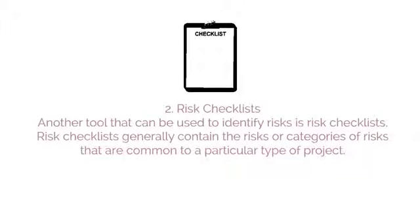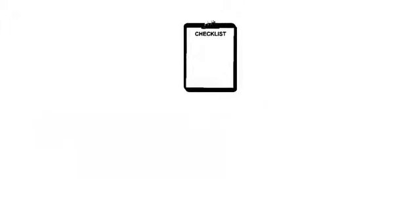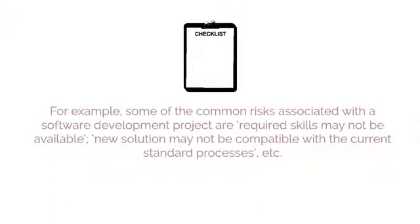Another tool that can be used to identify risks is the Risk Checklist. Risk Checklists generally contain the risks or categories of risks that are common to a particular type of project. For example, some of the common risks associated with a software development project are: required skills may not be available, or a new solution may not be compatible with current standard processes. Following is a template of a Risk Checklist.